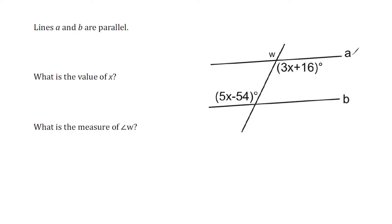In this figure, lines A and B are parallel to each other, and we have a transversal. First, we have to find the value of x. We need to look at the relationship between this expression 3x plus 16 and this expression, and where they sit in this figure. We can see they're both on the inside of the parallel lines, so they're interior angles, and they're on alternate sides — so these are alternate interior angles.